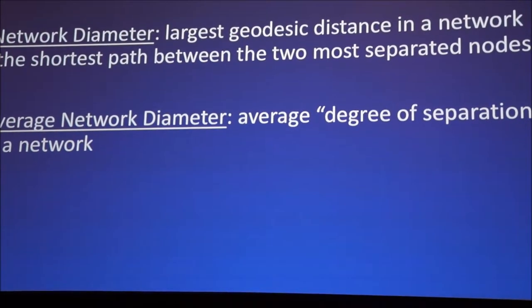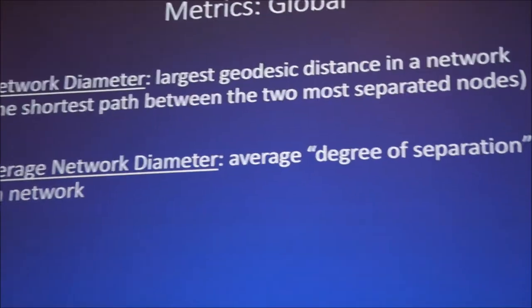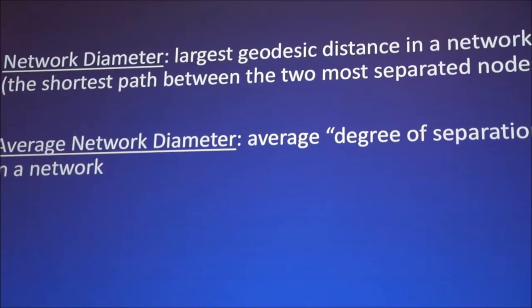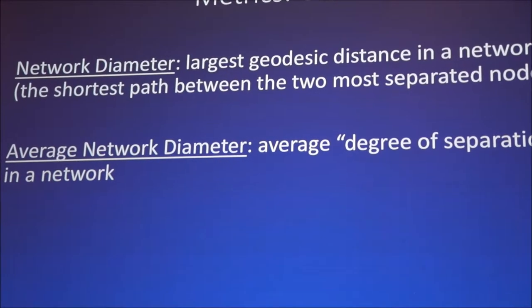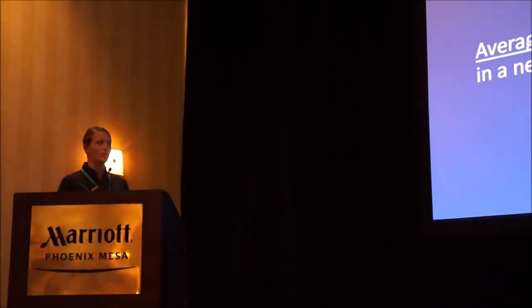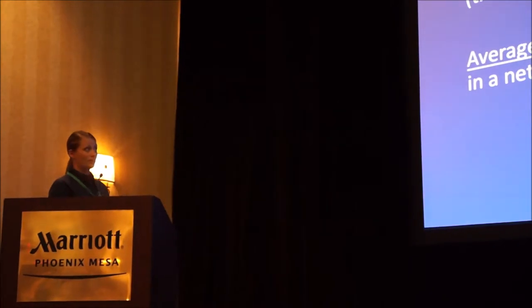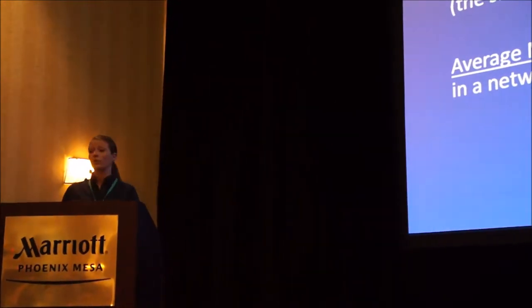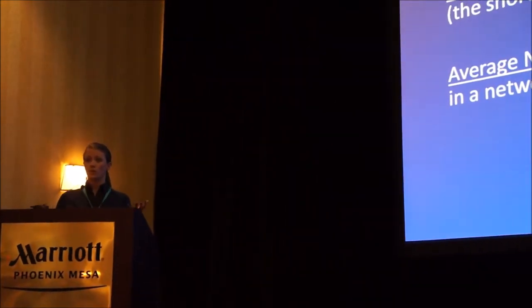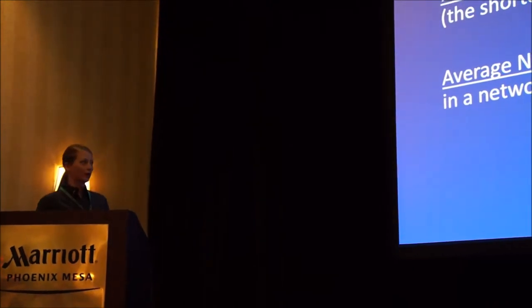Network diameter, similar to diameter explained before. It's the largest geodesic distance in a network. So it's essentially the shortest path between the two most separated nodes in a network. And the average is exactly what it sounds. It's the average degree of separation in a network, which is a term we're probably all familiar with, degrees of separation.